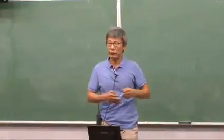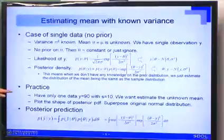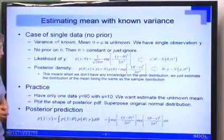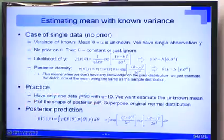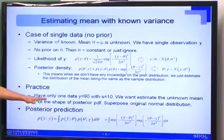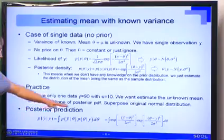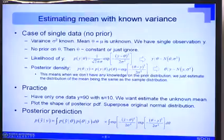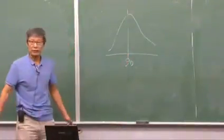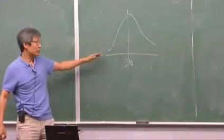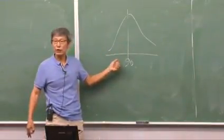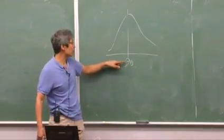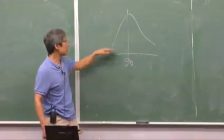Let's skip to the practice: say we have only one data point y equals 90, and we already know the standard deviation is 10. We'd like to estimate the unknown mean based on this single piece of information and find the shape of the posterior PDF. The result is a normal distribution centered at 90. This distribution represents our degree of belief about the unknown mean — highest likelihood at 90, less at other values.